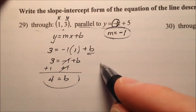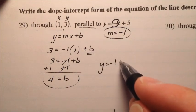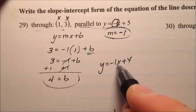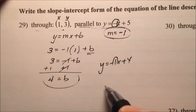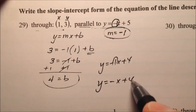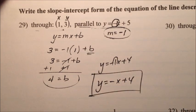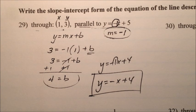So I know that my b value is going to be 4, so y equals mx plus b will be y equals negative 1x plus 4, but we don't want to see that 1 there, so my final answer will be negative x plus 4. So for 29, we were talking about parallel lines, and our solution is y equals negative x plus 4.